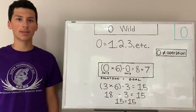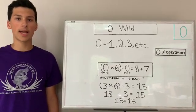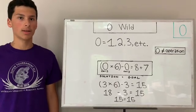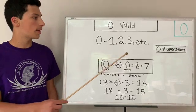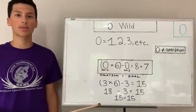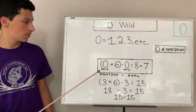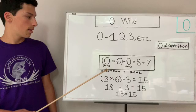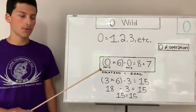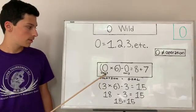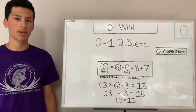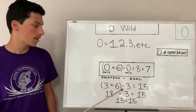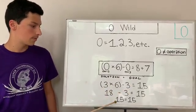Now, we have 0 wild. In 0 wild, the 0 cube can represent any numeral, but that numeral must be the same throughout the goal and the solution. The 0 can be from 1 through 9, but it cannot be in operations such as plus or minus. If you look at this solution here, the solution is 0 times 6 minus 0 equals 8 plus 7. The 0 is being used to represent a 3, and it has to represent 3 in both 0s because it can't change. The value of the 0 can't change. So, 3 times 6 is 18, minus 3 is 15. So, 15 equals 15.